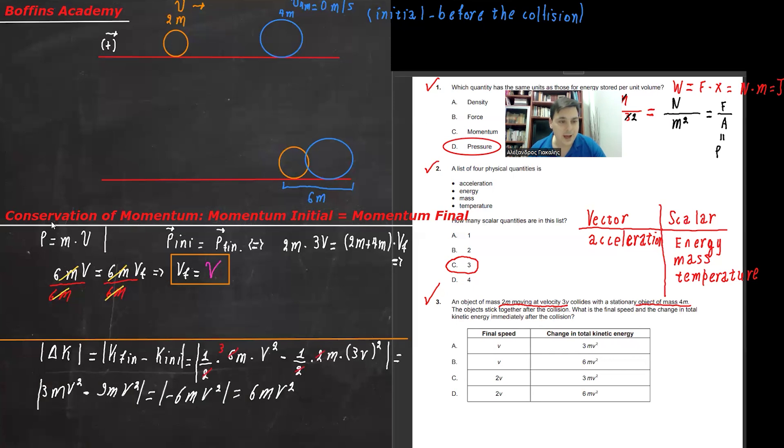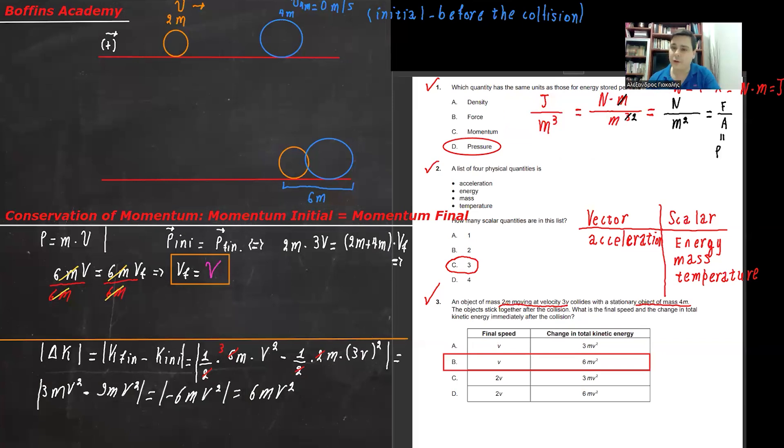Basically, the answer that is in total correlation, 100% correlation with what we found so far is option B, final speed v, change in total kinetic energy 6mv squared.